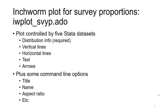Conceptually, how do we make an inchworm plot? The plots are controlled by up to five Stata datasets. You always need a dataset that describes the distribution info — you know what the strata are, how many distributions you're going to put in the plot. You need to make a dataset with one row per inchworm describing some information about that inchworm. That is required. Then optionally, you can annotate or augment the plots: you can put vertical lines, horizontal lines, add text, and add arrows — each of those would be an additional optional dataset. The help files describe the elements of each dataset, and the demo files demonstrate them as well.